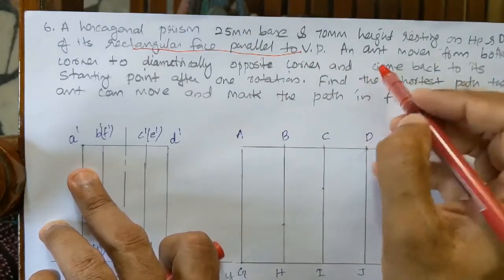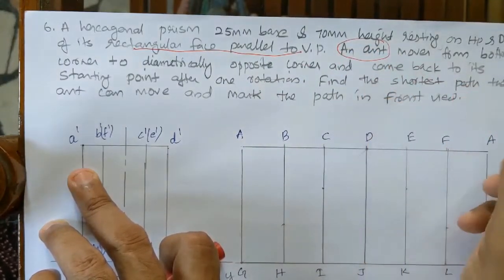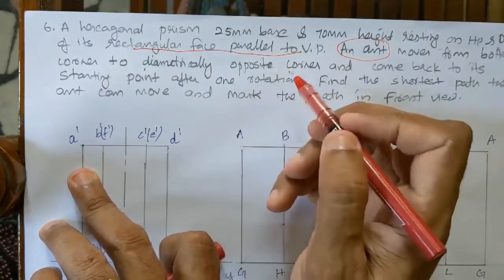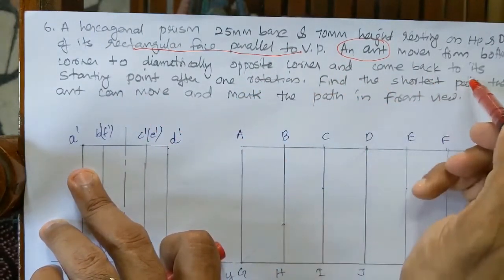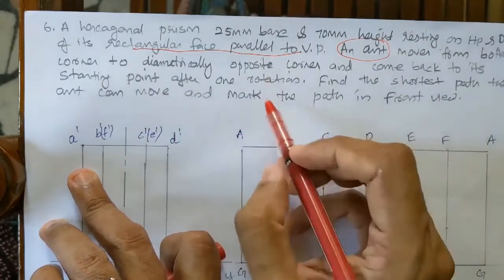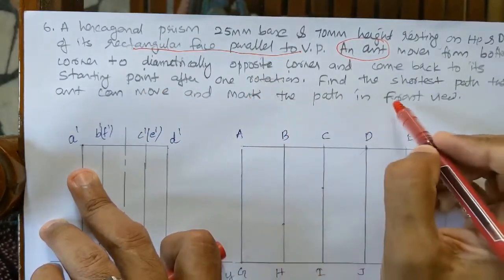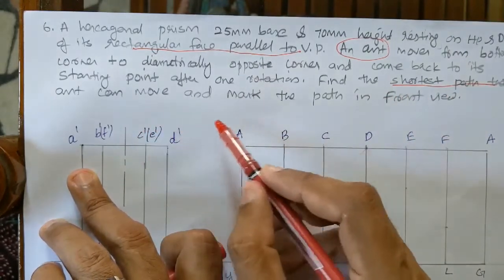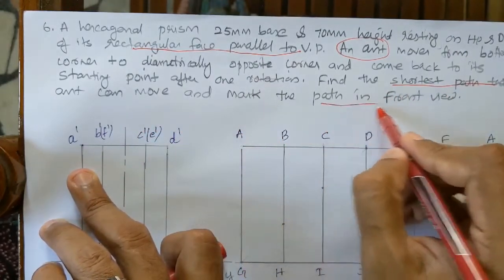An ant moves from bottom corner to diametrically opposite corner and comes back to its starting point after one revolution or rotation. Find the shortest path that ant can move and mark the path in front view.